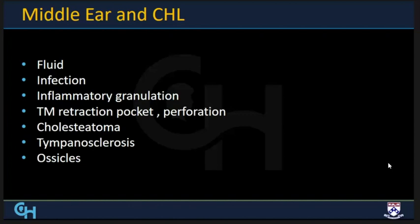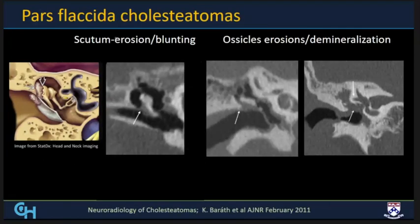Moving to middle ear causes: fluid, infection, and inflammation with granulation tissue are the most common causes, but many don't need imaging and can be diagnosed clinically. Imaging is needed when there are complications or intracranial extension concerns. The important entity in this group is cholesteatoma. Pars flaccida cholesteatomas are the most common, starting from the pars flaccida portion of the tympanic membrane, and are typically found lateral to the ossicular chain.